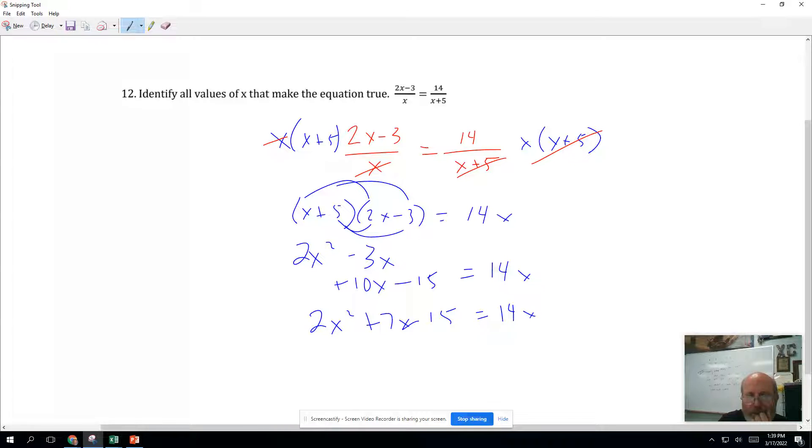Equals 14X. That's a 7X there. Oops, that's minus. I'm going to subtract 14X from both sides. It's a minus there. That gives me 2X squared minus 7X minus 15 equals 0.